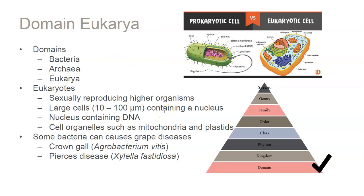I'm not going to spend a ton of time on taxonomy, but it's useful to go through. Grapevines are eukaryotes, not prokaryotes, not single-cell organisms. Anything that's a eukaryote is a sexually reproducing higher organism with large cells, a nucleus containing DNA, and cell organelles like mitochondria and plastids. While our plant is a eukaryote, there are bacteria that are important to grapevines because they can cause diseases like crown gall and Pierce's disease, which clog up the vascular tissue and cause the grapevine to go into water stress and eventually die.